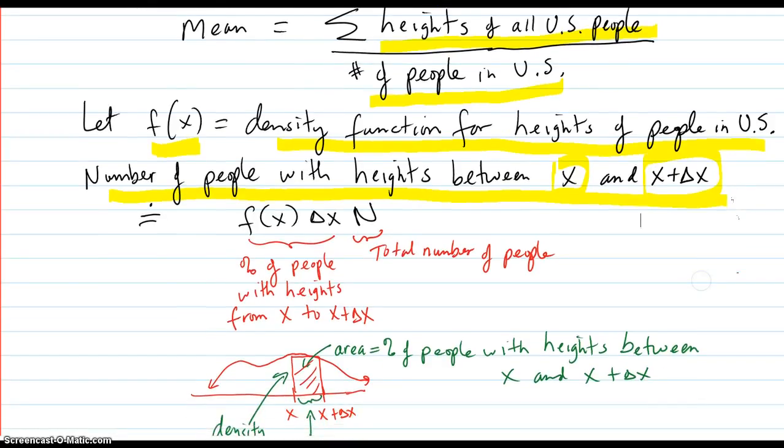That would be the percent of people with those heights from x to x plus delta x. But that's just the density times the width of that interval. Because when you times those together, you get the area,